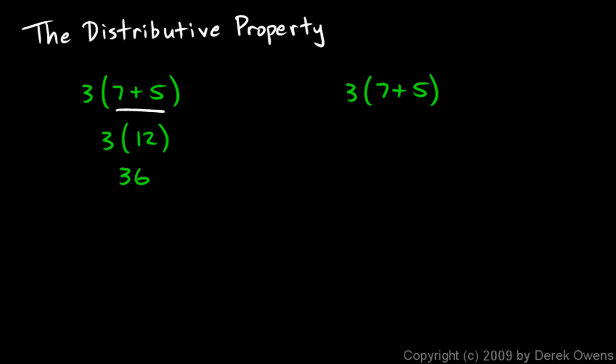Instead of doing what's in the parentheses first, though, I could distribute the 3. So the 3 could be multiplied by the 7, and then I have my plus, and then the 3 multiplied by the 5. I could do 3 times 7 plus 3 times 5. And 3 times 7 is 21, and 3 times 5 is 15. And 21 plus 15 is 36. So there we have it, the same answer in either case. You can do what's in parentheses first and get an answer, or you can distribute what's on the outside multiplied by the group, and you get the same answer.